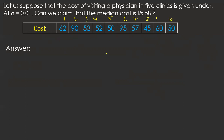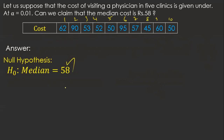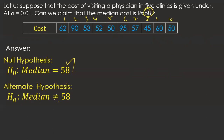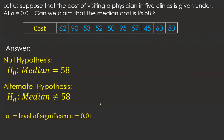Now I am going to find out the null hypothesis. H₀: median = 58 — whether the cost is 58 or not, I am finding it out. The alternate hypothesis is: median ≠ 58. Alpha, the level of significance, is 0.01.